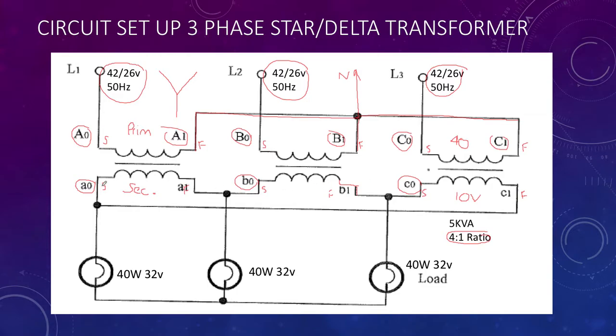If we start with the A phase, you'll notice that our finish is connected to the start of B phase. There's our first link. Then the finish of B phase is connected to the start of C phase. And then finally, our finish on our C phase is then connected all the way back to the start of A phase. So our transformer on the output side, or secondary side, is a delta-shaped winding.